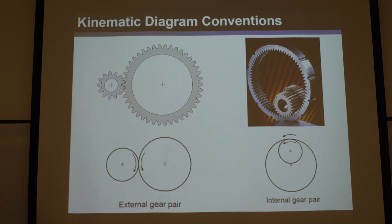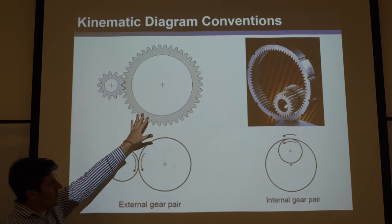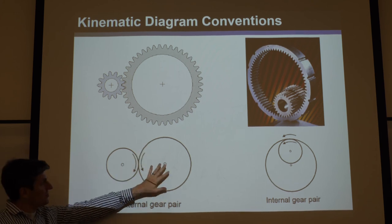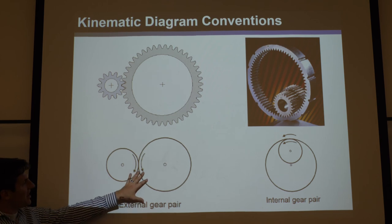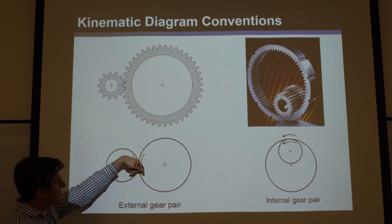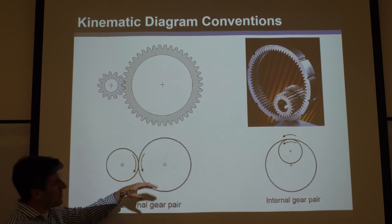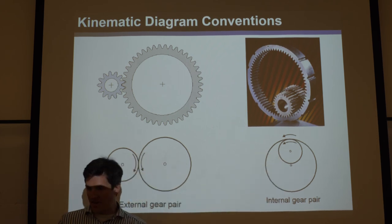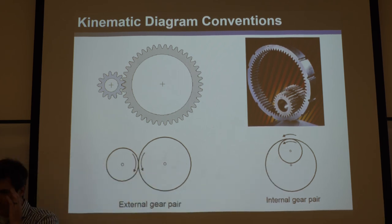Engineers don't want to draw gears because they have a lot of teeth and complicated involute profiles. To simplify them for skeleton diagrams, they just draw circles. For external gears, arrows show the direction of movement. For internal gears, an arrow is drawn inside. So if you see circles in this class, they are gears.